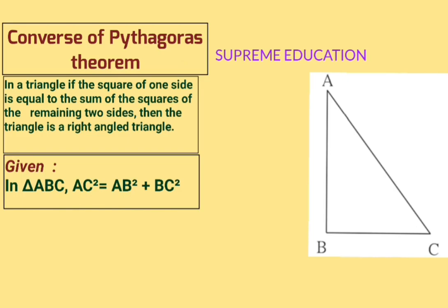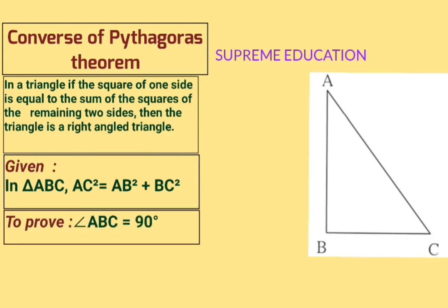To prove is the part of the statement that comes after 'then': the triangle is a right angle triangle. So we have to prove triangle ABC is a right angle triangle, meaning we have to prove angle ABC = 90°. We take angle ABC because AC is taken as the bigger side, and angle opposite to AC is angle ABC.